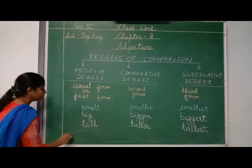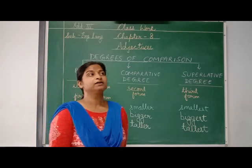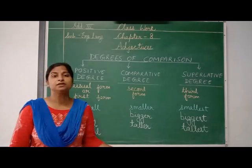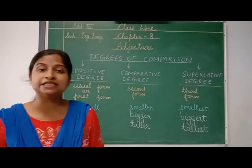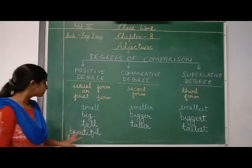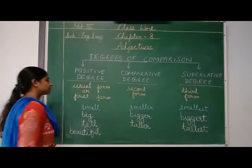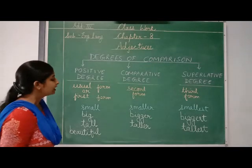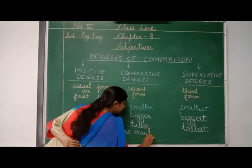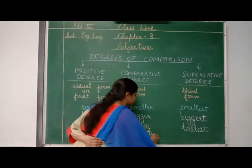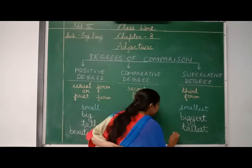In some words, like beautiful, there are more than two syllables. A syllable is a word or part of a word which contains one vowel sound. Here there is more than one syllable. So how can we change this into comparative degree? We will add more before beautiful — we can't say beautifuler, we say more beautiful. And to make it superlative degree, we say most beautiful.